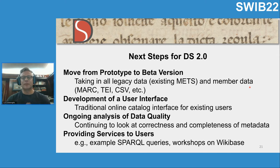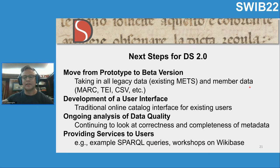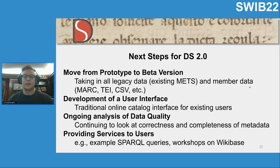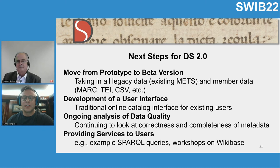Our next steps are to move from our prototype to our beta public version. We're going to do this by taking existing METS data and member data in other formats. We're also working simultaneously on the development of a user interface — a more traditional catalog that takes the linked data available in the Wikibase, flattens the data model, and provides a more traditional user experience. We're continuing to analyze our data quality, especially in terms of semantic enrichment alignments, and our goal is to provide example SPARQL queries so folks know how to use our Wikibase, and to provide workshops to manuscript scholars so they can do computational research and advance other kinds of digital humanities research.